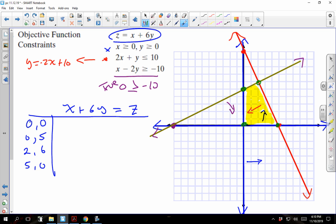So 0, 0 clearly is just going to give us 0. 0 plus 30 gives us 30. 2 plus 36 gives me 38. And 5 plus 0 gives me 5. Clearly, that's my maximum. And therefore, this ordered pair right here is the ordered pair that maximized my objective function.